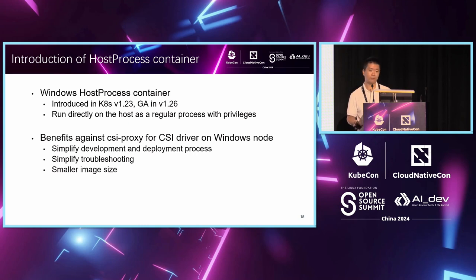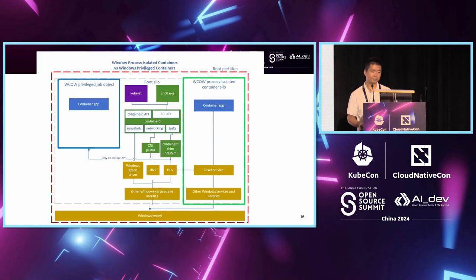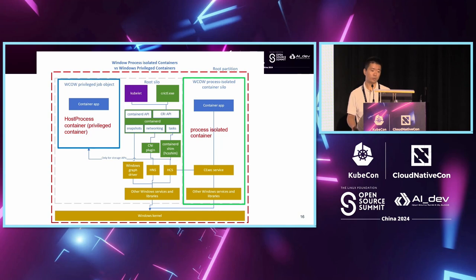The host process container has some benefits compared to the CSI proxy for CSI drivers running on Windows nodes. For example, it simplifies the development and deployment process. It's quite easy now, and also the image size is very much smaller than the normal Windows image. This diagram shows the difference in implementation between the host process container and the process-isolated container running on Windows.